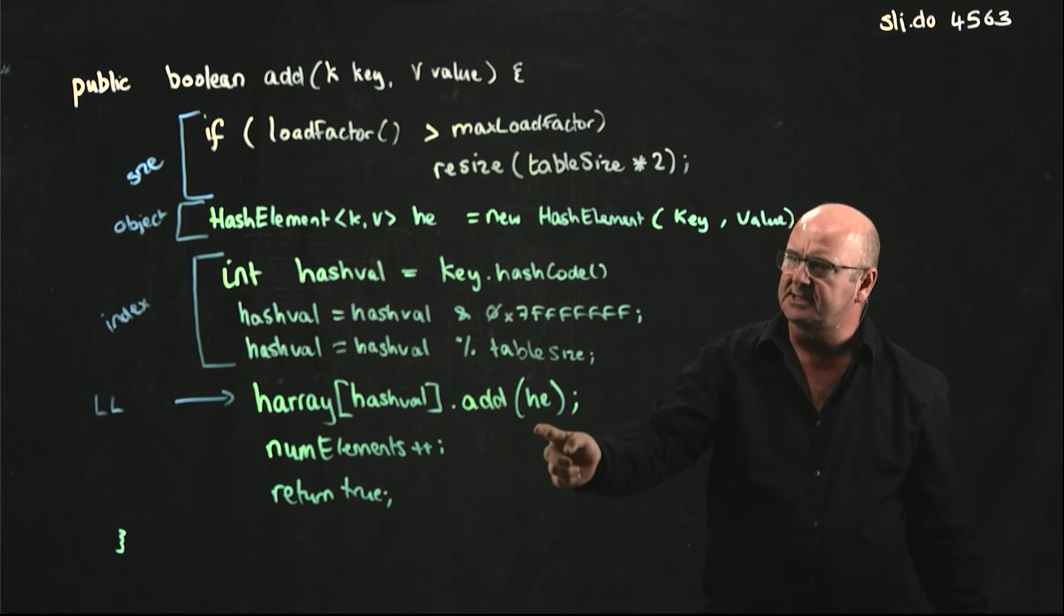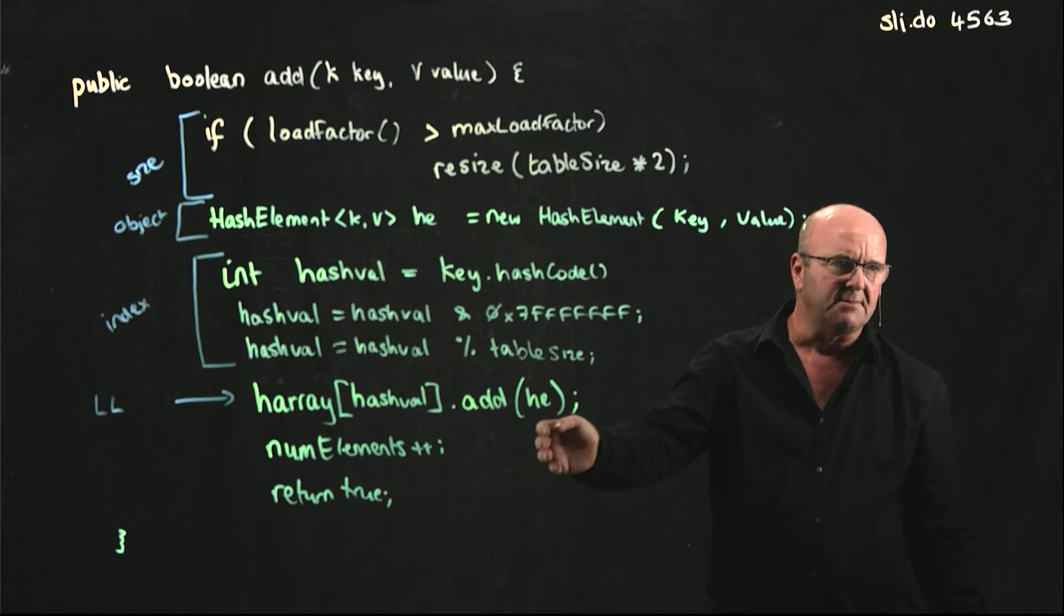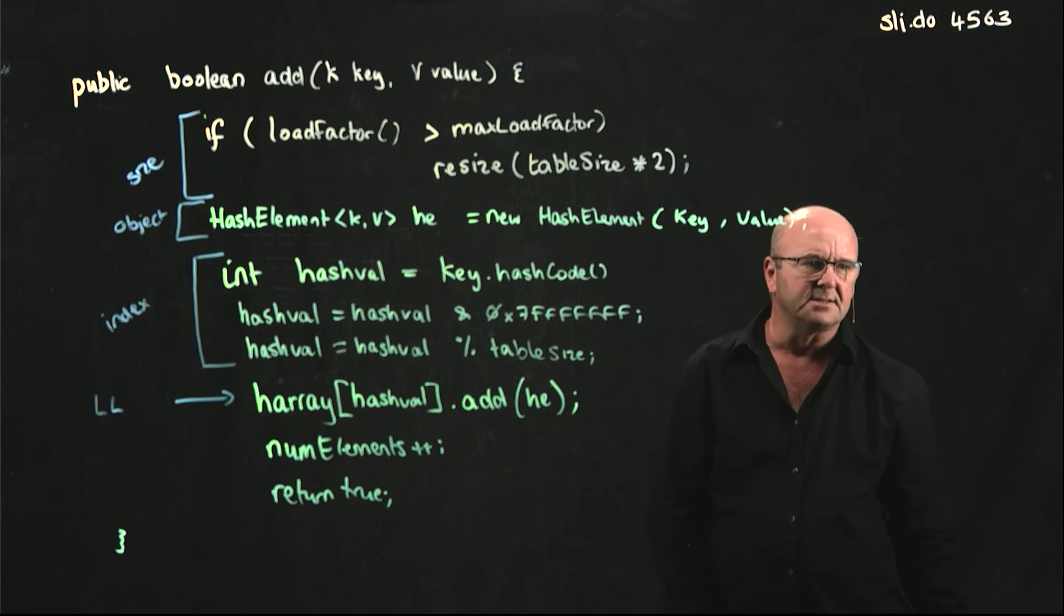We could have a simple add first without a tail pointer, because all we're going to do is add. It doesn't matter if we add first. Hopefully, most of the time, our linked list will only have one object in it, maybe two objects. It doesn't matter if it's the first object or the second object. So not having a tail pointer here would trivialize things, and we'll just use the add first method.